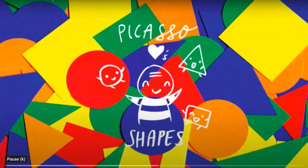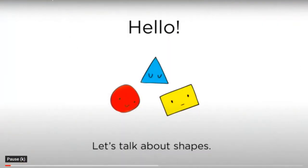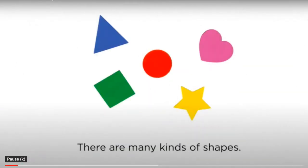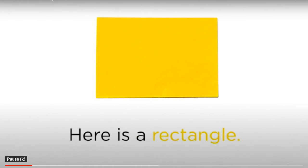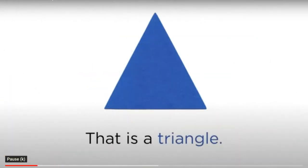We're going to learn all about different types of shapes and how artists use them to make pictures of other things. Let's watch! Picasso loves shapes. Hello, let's talk about shapes — there are many kinds of shapes. This is a circle, here is a rectangle, and that is a triangle.